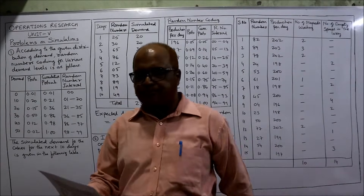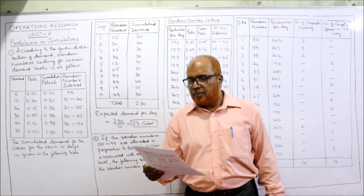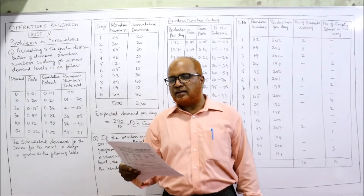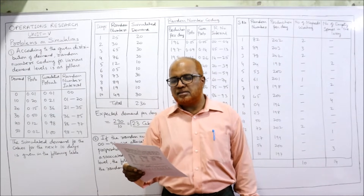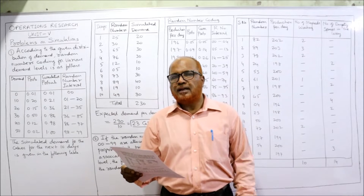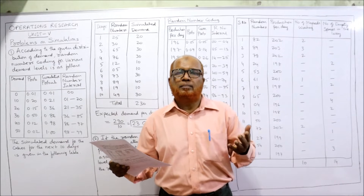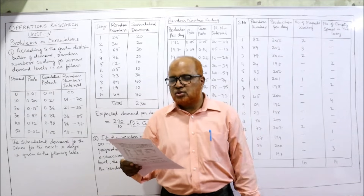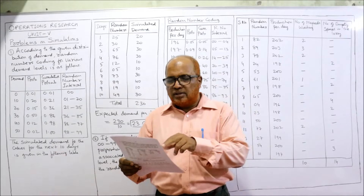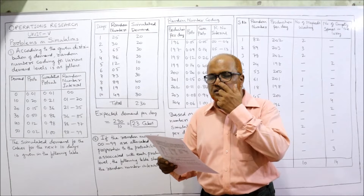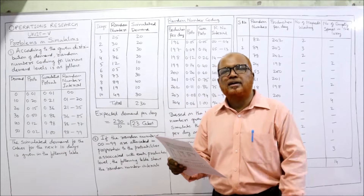See the first problem. A bakery keeps stock of a popular brand of cakes. Previous experience shows the daily demand pattern for the item with associated probabilities as given below. Daily demand: 0, 10, 20, 30, 40, 50. The demand will never be negative — it will be zero or above, up to 50. The probability of zero demand is 0.01.